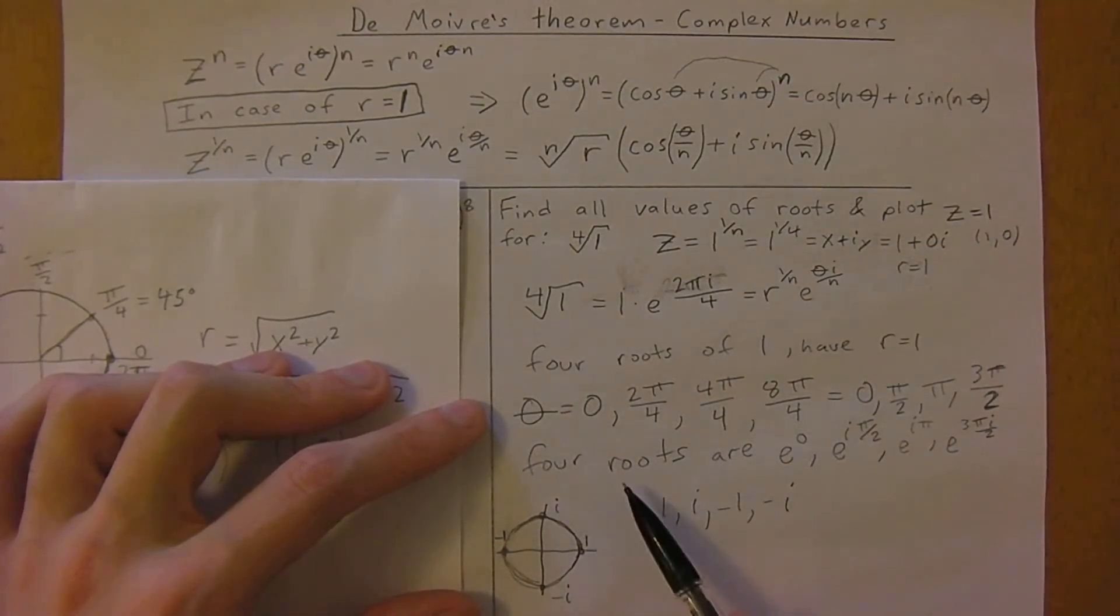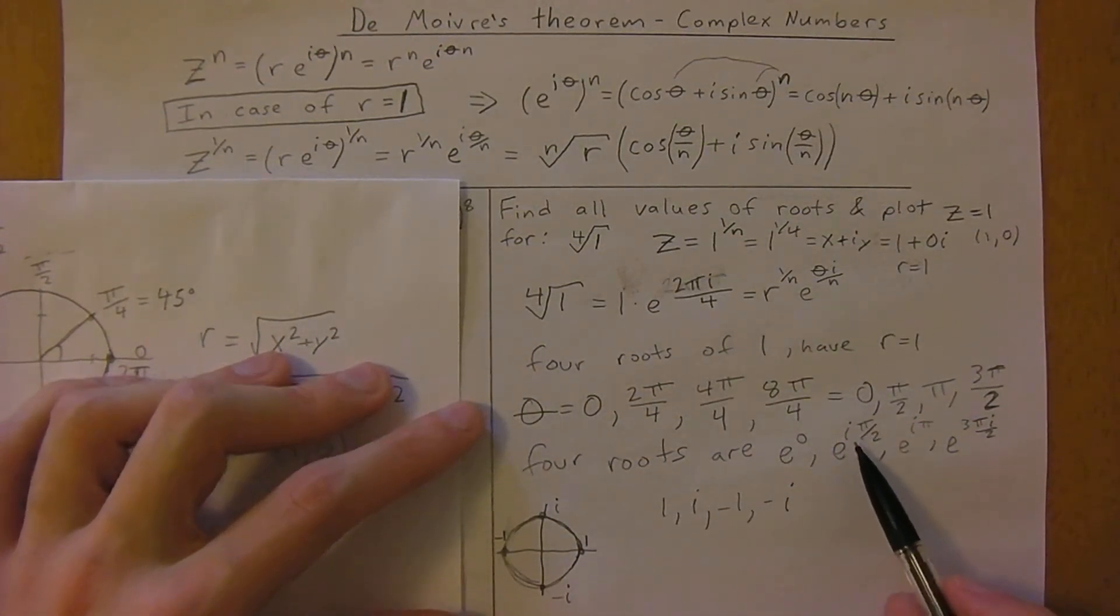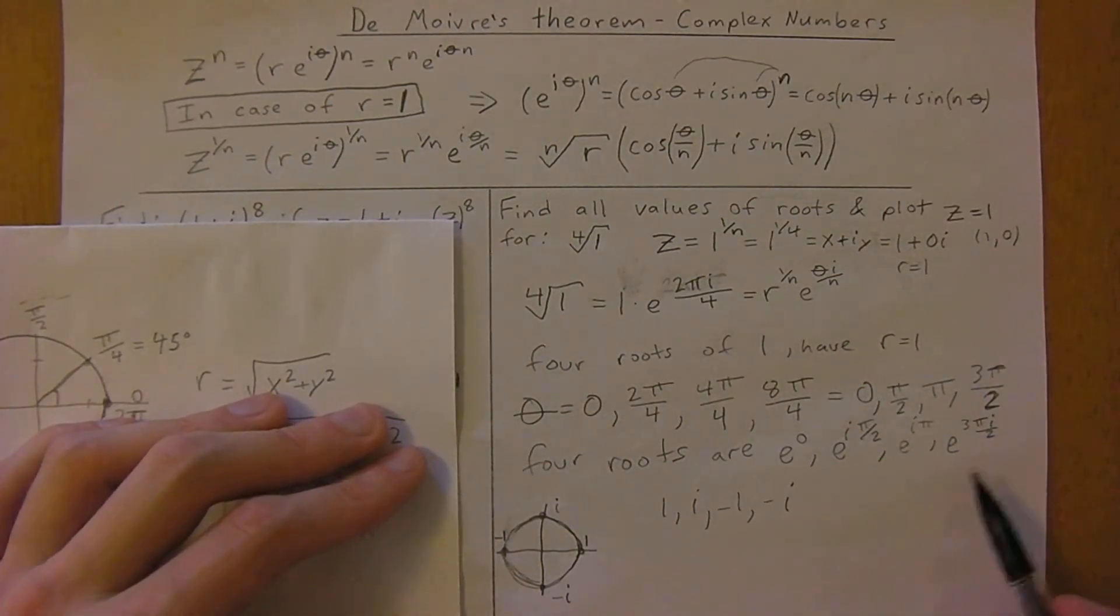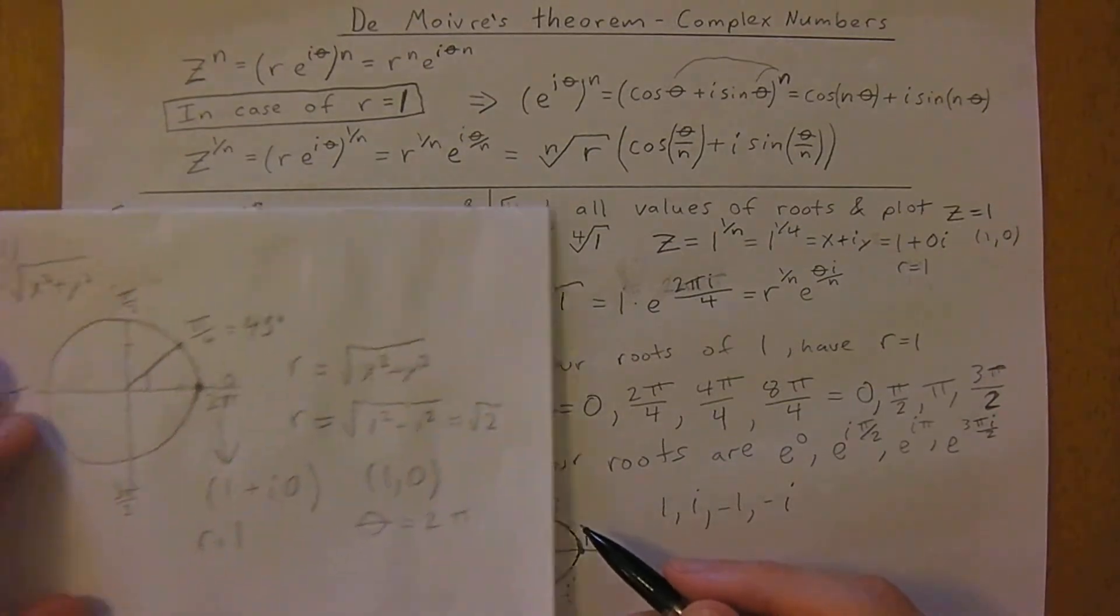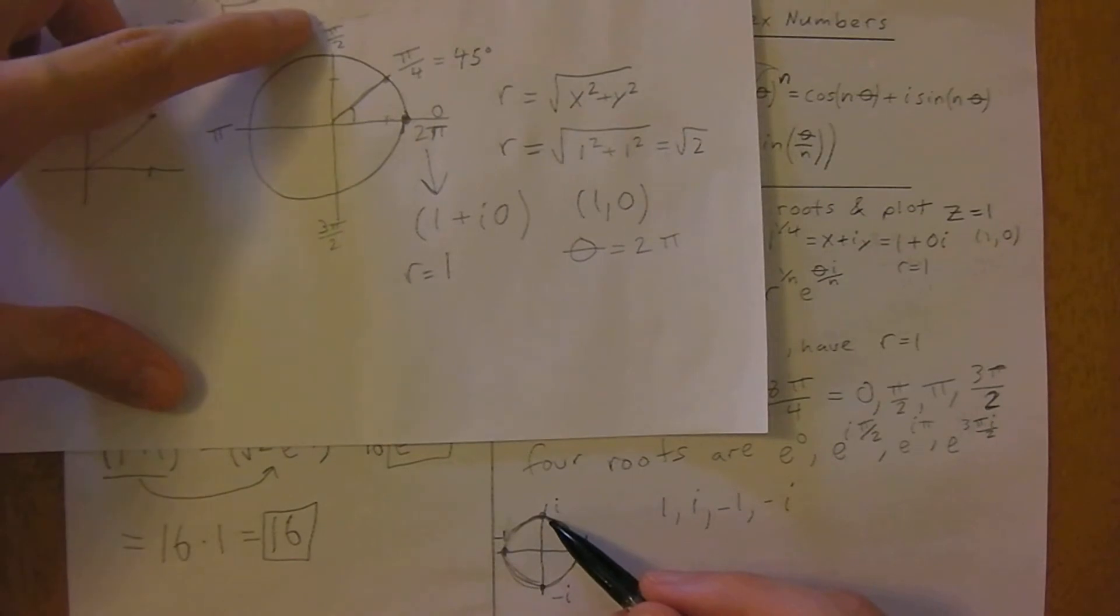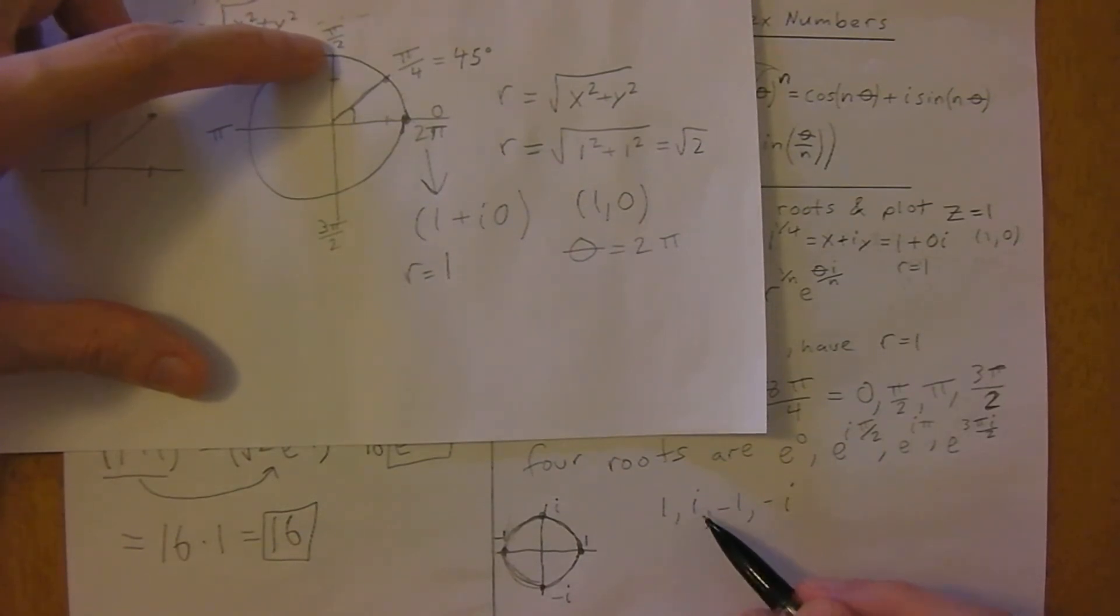So the four roots are going to be e to the 0, e to the i pi over 2, e to the i pi, and e to the 3i pi divided by 2. If you now plot these points, 0 radians is just 1. Pi over 2 at 90 degrees is going to be at i, so the point 0, 1, or 0 plus i.